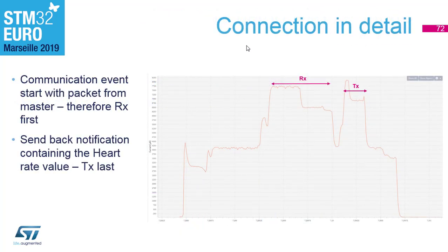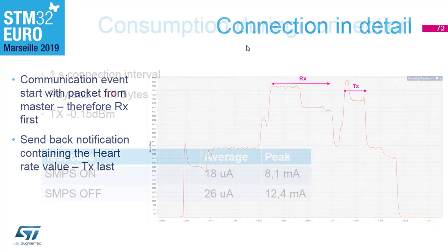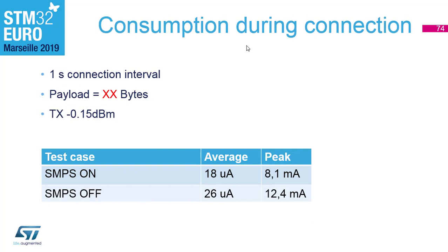This is a zoom into one radio event in connection mode. Now the order is swapped compared to advertising: when in connection, the microcontroller first receives from the Bluetooth master — which is the phone — and then transmits either a zero-length packet or something valuable. So if we were to measure the power consumption in this configuration, that is the pattern we observe.